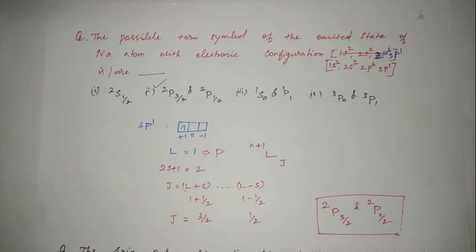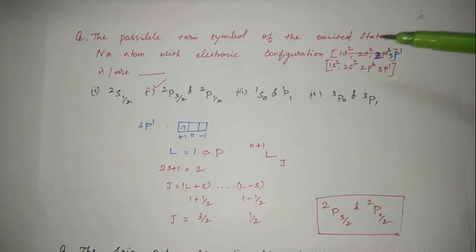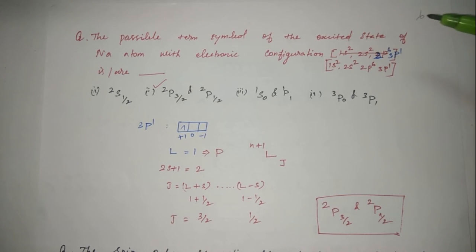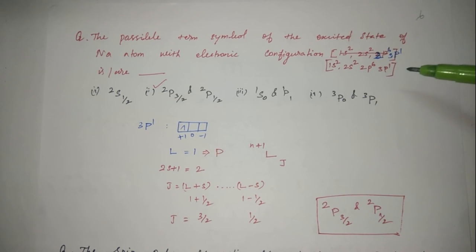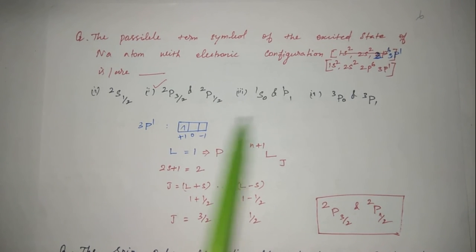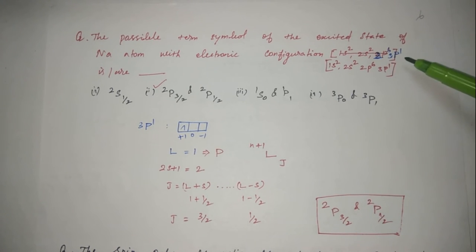Next question: find the possible term symbols for the excited state of sodium atom with configuration 1s²2s²2p⁶3p¹. Note this is the excited state — the ground state of Na is 1s²2s²2p⁶3s¹. The 3s¹ electron has jumped to 3p, giving configuration 1s²2s²2p⁶3p¹. The electron is in a p orbital, so the term letter is P.